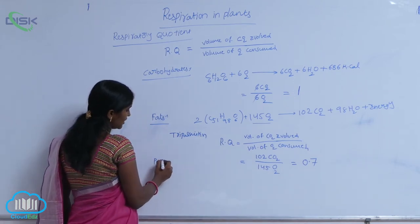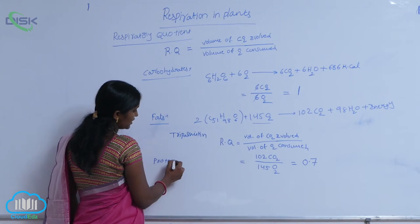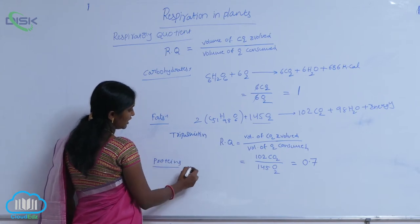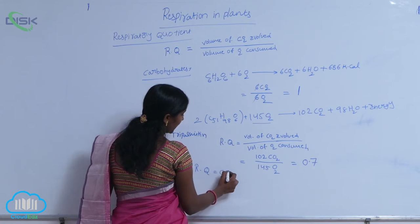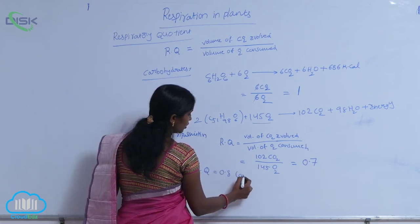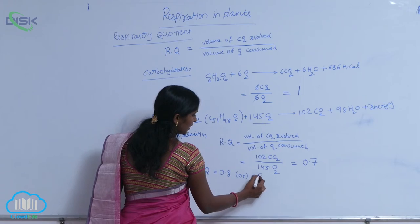And, come to the proteins, for proteins, the respiratory quotient is equivalent to 0.8 or 0.9. Here also, the required oxygen is more compared to the evolved carbon dioxide.